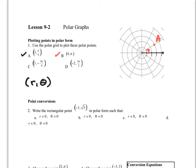Point B means to go to pi, so I go all the way over to pi. Then I go out 4 units — 1, 2, 3, 4. That would be my B measurement.